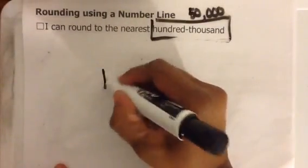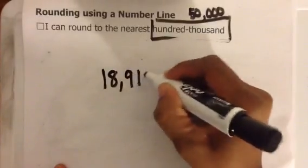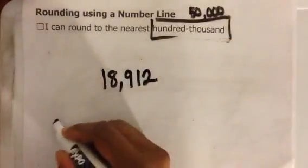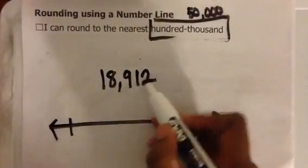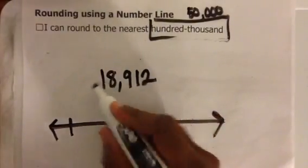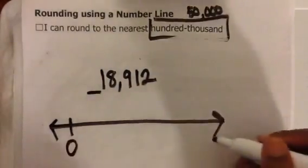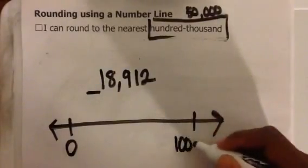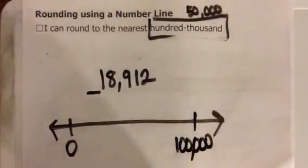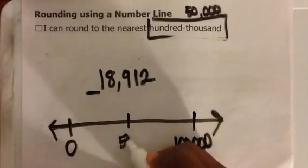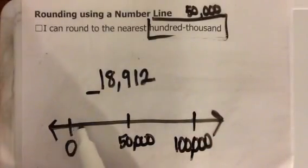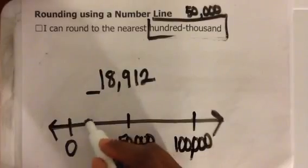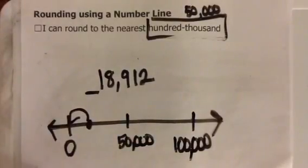Let's do eighteen thousand nine hundred twelve. Ones, tens, hundreds, thousands, ten thousands, hundred thousand. Plus one hundred thousand gives me a hundred thousand. Halfway between zero and one hundred thousand is fifty thousand. Plot eighteen thousand nine hundred twelve on this number line — about right here. Eighteen thousand nine hundred twelve rounded to the nearest hundred thousand is zero.